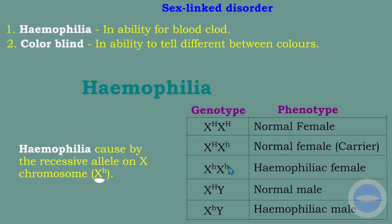For males: X^H Y = normal male; X^h Y = hemophiliac male. There is a higher chance of this disorder occurring in males than in females, because a male only needs one recessive allele on his single X chromosome, whereas a female needs two recessive alleles.